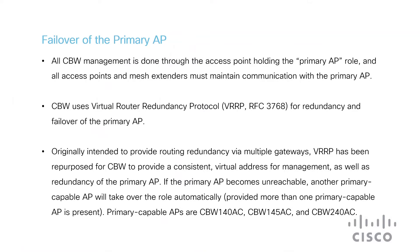If the primary AP becomes unreachable, another primary capable AP will take over the role automatically. This will occur only if more than one primary capable AP is present on the network. Primary capable APs are the CBW-140AC, CBW-145AC, and CBW-240AC.